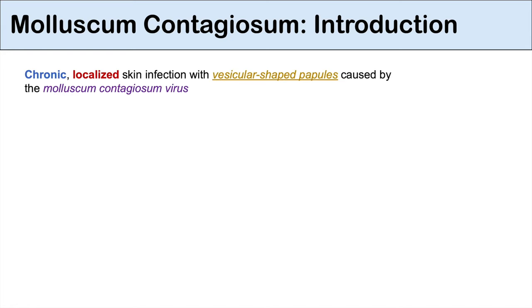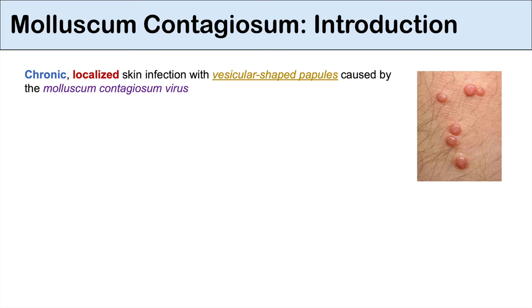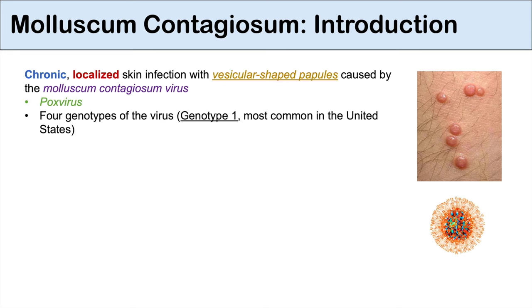Molluscum contagiosum is a chronic localized skin infection with vesicular shaped papules that is caused by an infection with the molluscum contagiosum virus. The molluscum contagiosum virus is a pox virus and there are actually four different genotypes of the virus, and genotype 1 is the most common in the United States.